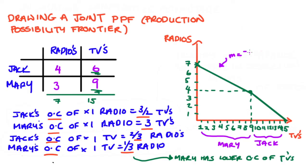Now, in particular, our slope here for Mary's portion of the PPF is going to be negative a third, where the absolute value of that is the opportunity cost of a TV. And for Jack, his opportunity cost of a TV is going to be two thirds of a radio. So the slope is negative two over three.